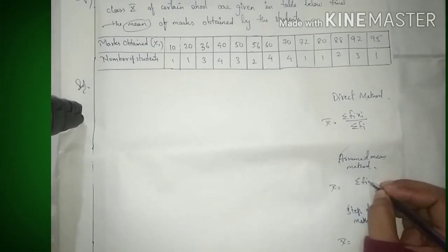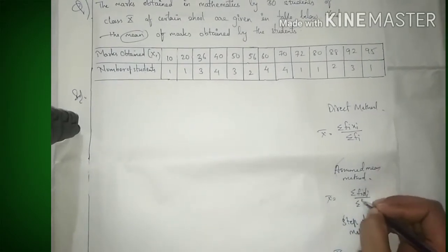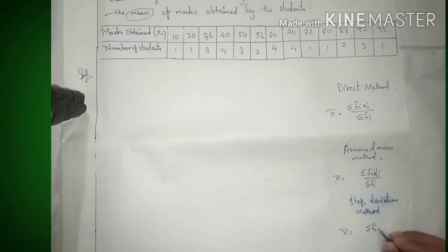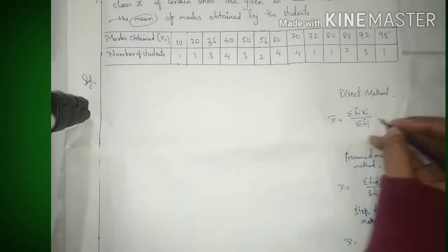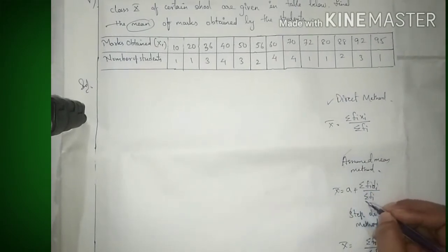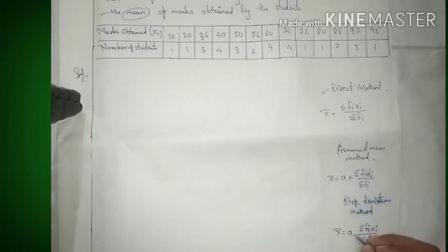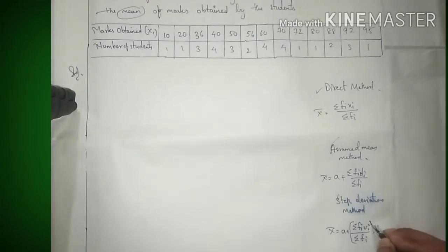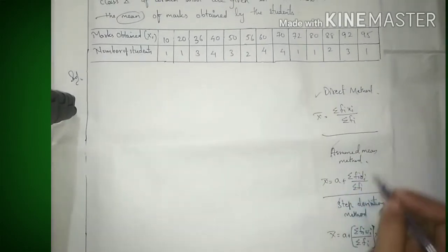Assumed Mean Method में Σfi·xi की जगह Σfi·di आता है, और Step Deviation Method में di की जगह fi·ui होता है। तो difference यह है: Direct Method में xi है, Assumed Mean Method में di है, Step Deviation में ui है। Assumed Mean Method का formula है: a + (Σfi·di / Σfi), और Step Deviation का formula है: a + h × (Σfi·ui / Σfi)।